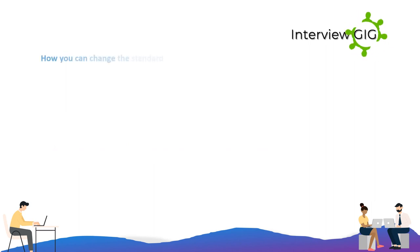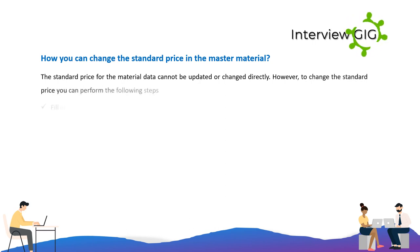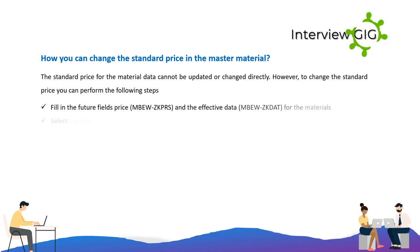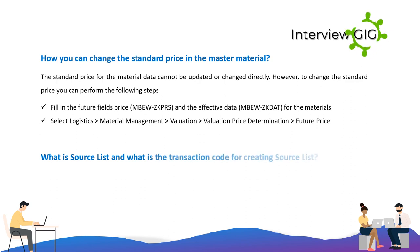How can you change the standard price in the master material? The standard price for material data cannot be updated or changed directly. However, to change the standard price you can fill in the future fields price and the effective date for the materials, then select: Logistics > Material Management > Valuation > Valuation Price Determination > Future Price.